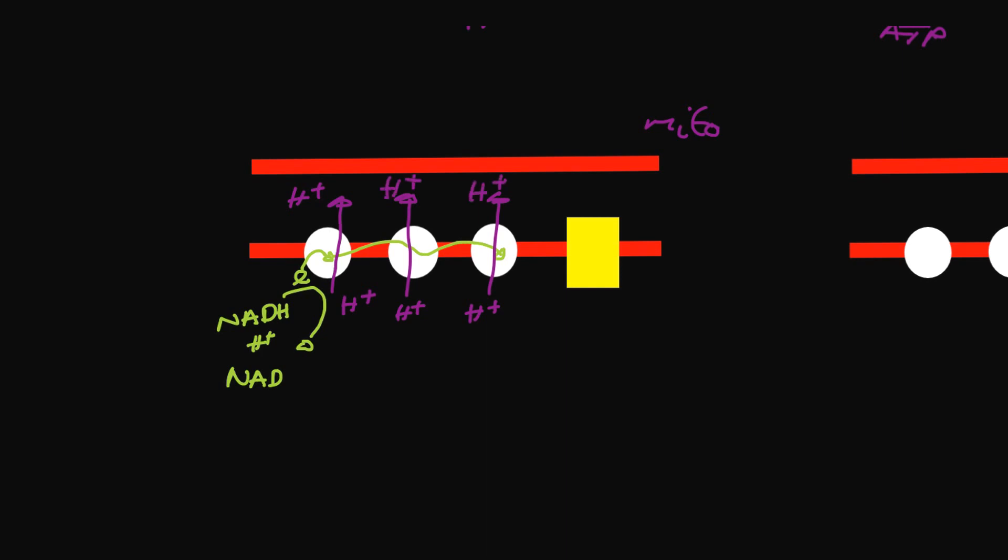At the end of the electron transport chain, the electron joins with oxygen and hydrogen ions and makes water. So the role of oxygen is to be the final electron acceptor in the electron transport chain.